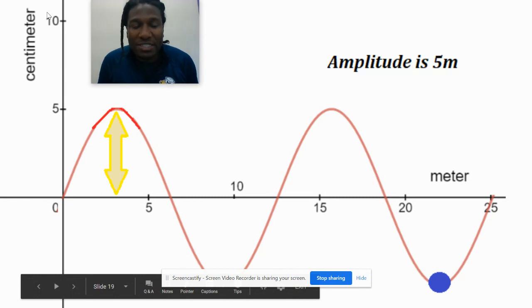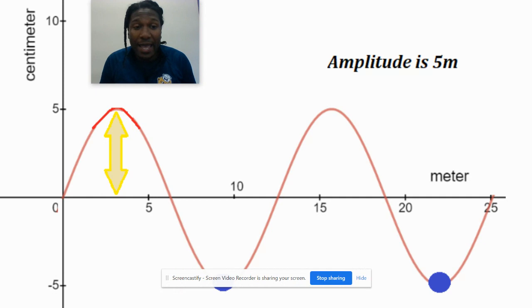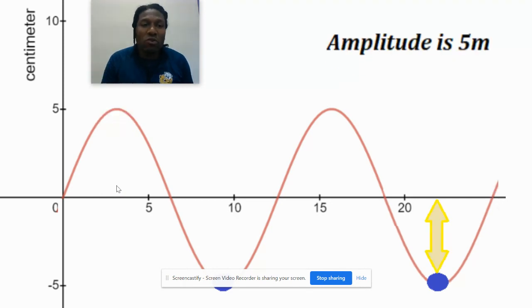Now same deal here. If I'm looking at the distance between the equilibrium and a crest, still five centimeters. So here you go, this distance right here. It doesn't even matter which trough I choose or which crest I choose.